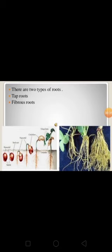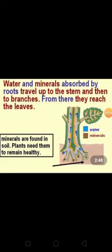The second type is fibrous roots. These roots are a cluster of roots that are spread into the soil. They have no main root. Fibrous roots don't go deep into the soil. These roots are found in wheat, grass, rice, maize, etc. Now, the functions of roots: roots hold the plant firmly to the ground; roots bind the soil and prevent soil erosion; and roots help a plant absorb water and minerals from the soil.